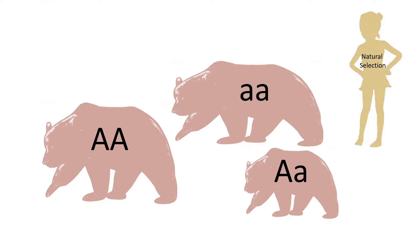In this metaphor, Papa Bear is going to represent being homozygous for the wild type, unmutated allele that produces hemoglobin protein, and Mama Bear is going to represent being homozygous with a mutated version of hemoglobin protein. Both of these are going to be acted on negatively by natural selection in regions of the world where malaria is common, but Baby Bear is going to be just right for the species to survive.